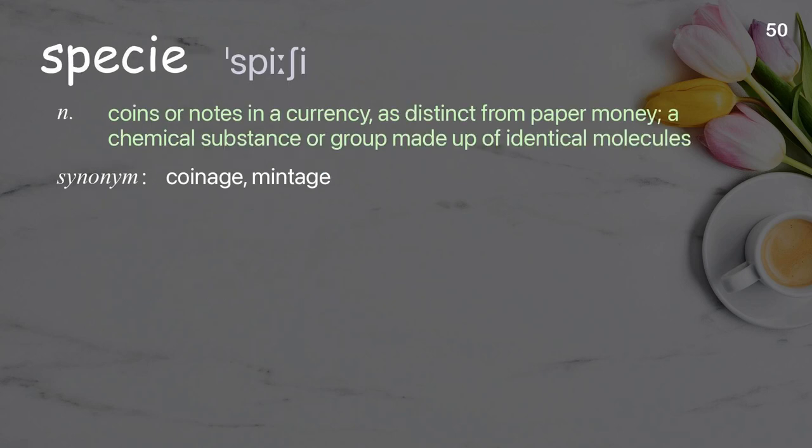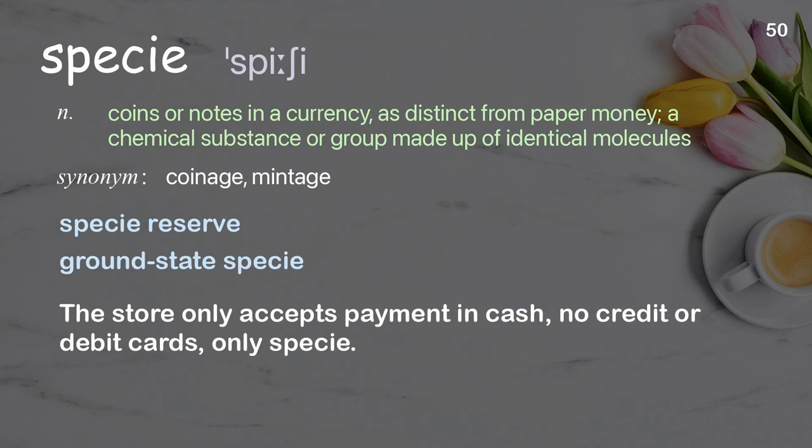Specie: Coins or notes in a currency, as distinct from paper money; a chemical substance or group made up of identical molecules. Examples: Specie reserve. Ground state specie. The store only accepts payment in cash — no credit or debit cards, only specie.